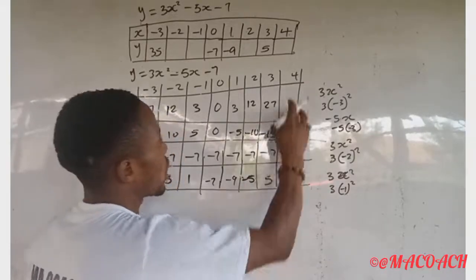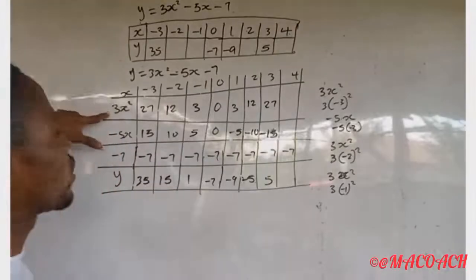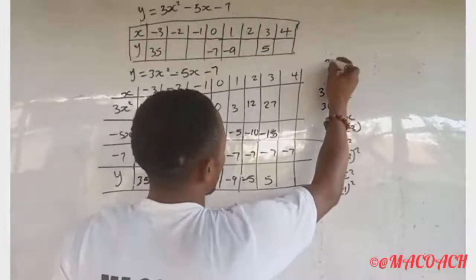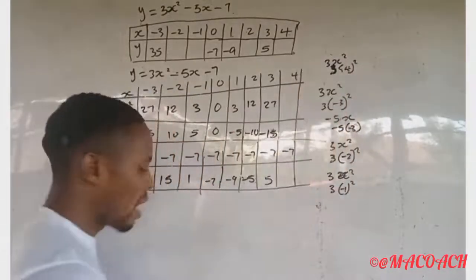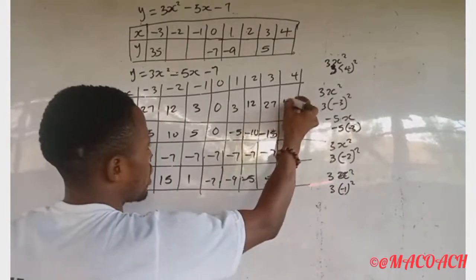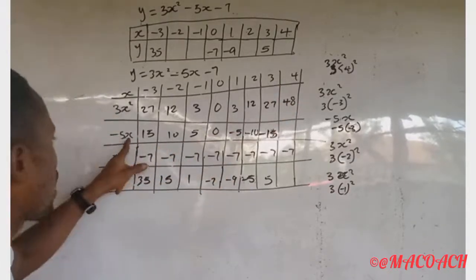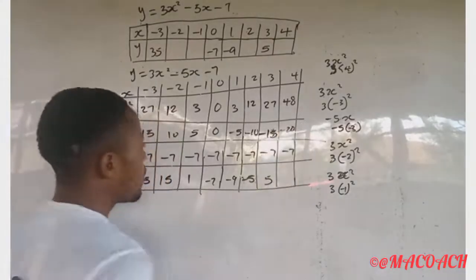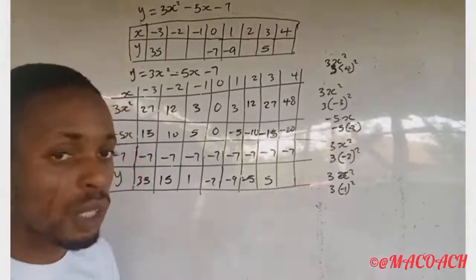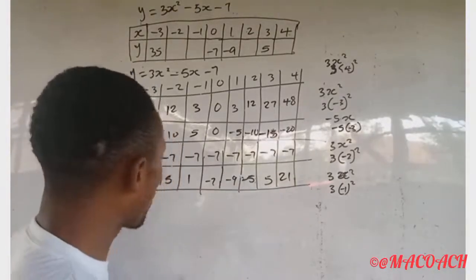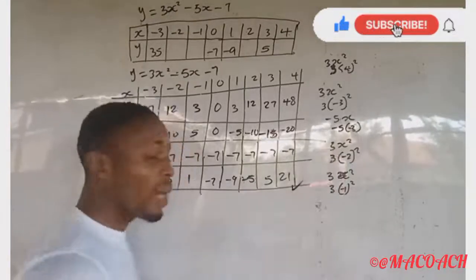When s equals four: three s squared becomes three times four squared, which is three times sixteen, giving 48. Minus five times four gives minus twenty. So 48 minus 20 minus 7 equals 21. Y equals 21 when s equals four. We have now copied and completed the full table. Question A is solved.